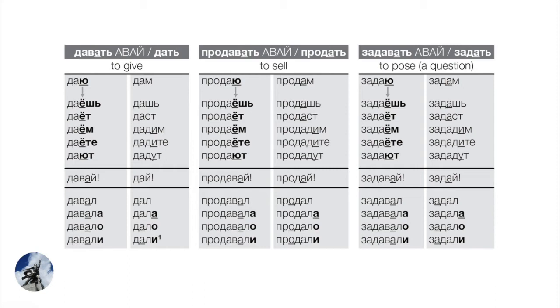Adding prefixes gives new verbs but the conjugation pattern remains the same. Продавать, to sell, imperfective: продаю, продаёшь, продаёт, продаём, продаёте, продают — present tense. Продать, perfective: conjugated forms are future tense in meaning — продам 'I will sell,' продашь, продаст, продадим, продадите, продадут. Finally, for posing a question: задаю, задаёшь, задаёт — present tense. Perfective задать conjugated: задам, задашь, задаст — future tense meaning, 'I will pose,' 'you will pose,' 'he/she will pose.'